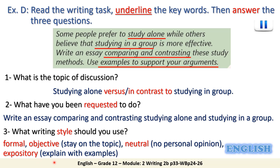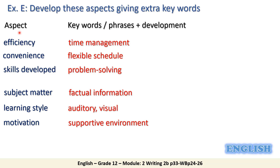Stay neutral — don't express your personal opinion or emotions. The style should also be expository, which means you should give explanations with examples in order to justify the main idea being discussed. The most important stage in writing an essay is brainstorming for the aspects — the ideas you are going to develop into paragraphs.